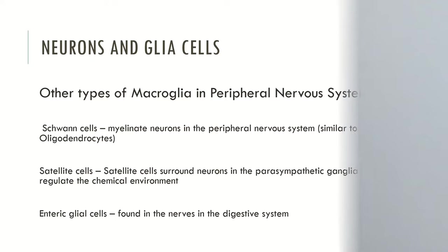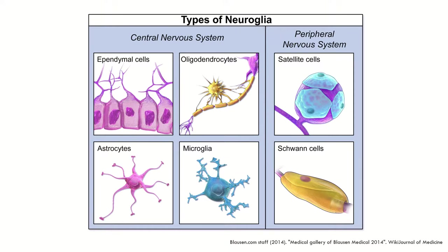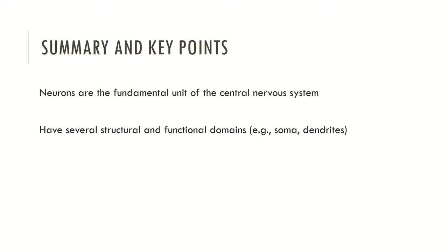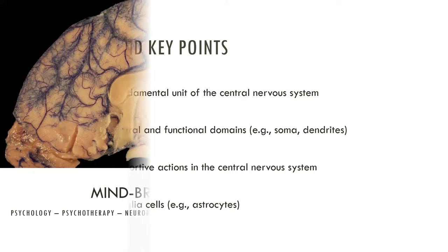Glial cells may be divided by their location — some are in the central nervous system and others in the peripheral nervous system. In the CNS: ependymal cells, oligodendrocytes, astrocytes, and microglia. In the peripheral nervous system: satellite cells and Schwann cells. In summary, neurons are the fundamental unit of the central nervous system and have several structural and functional domains such as soma and dendrites. Glial cells have supporting actions in the CNS, and there are different types of glial cells.